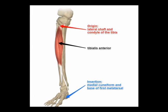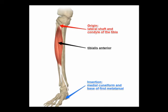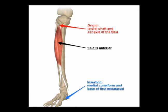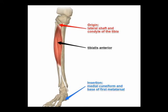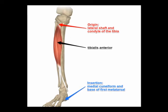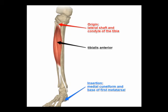Its origin is on the lateral condyle of the tibia, the proximal two-thirds of the lateral tibial shaft, and the interosseous membrane. Its insertion is on the base of the first metatarsal bone and also on the medial and plantar surface of the medial cuneiform.